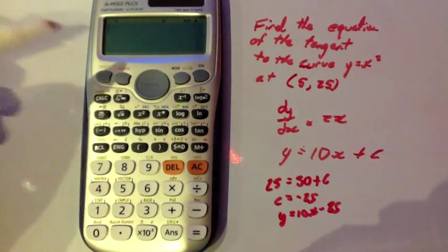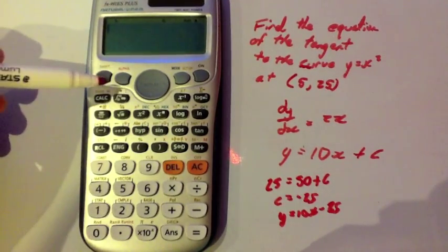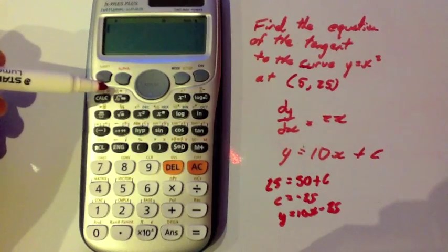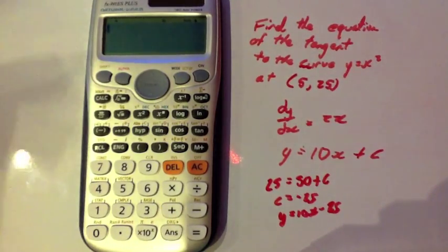Now, on this calculator, the fantastic Casio FX991 model, in yellow here, you've got d/dx and then a yellow rectangle. The calculator will differentiate and substitute in an x value for you.